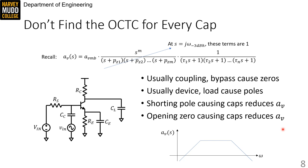Now, one important note is that we don't find the open circuit time constant for every cap when we're estimating bandwidth, and that's because we want to ignore caps that cause low frequency pole zero pairs. We've assumed that all of these terms are already equal to 1.